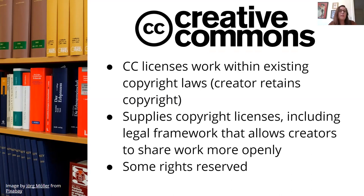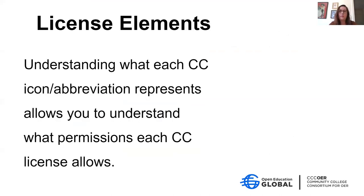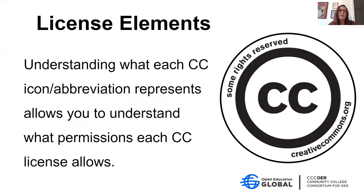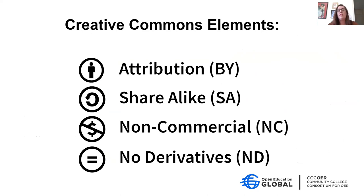You can think of Creative Commons as some rights reserved. The creator is still retaining copyright, but they're opening up a lot of the things that copyright restricts. Creative Commons licenses have different elements, and I want to go over each because once you understand them — you'll see them as either an icon or an abbreviation — you'll be able to know what each license gives you permission to do. There are four different elements, and each of the six Creative Commons licenses is some combination of these elements.